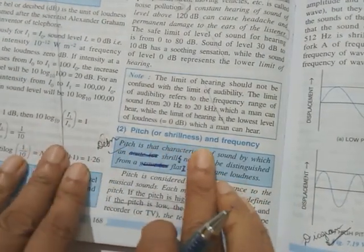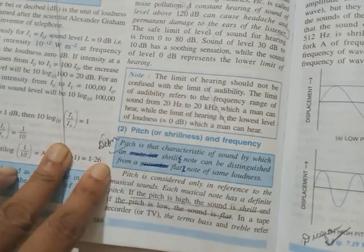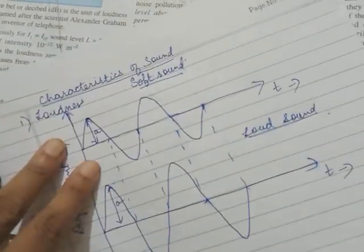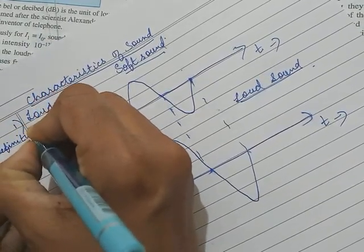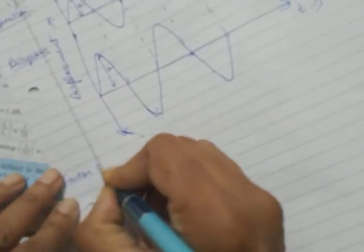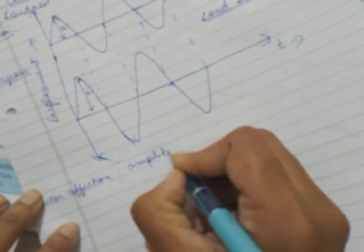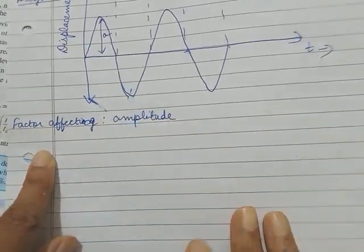Gently strike off the rest with a pencil. Now the second characteristic is pitch or shrillness. Under loudness, first write the definition, then draw the diagram, then write: factor affecting loudness is amplitude.